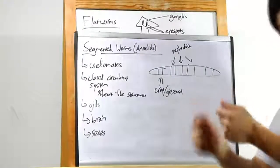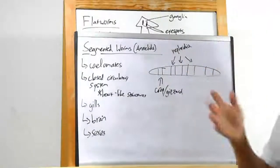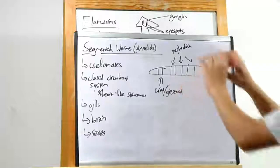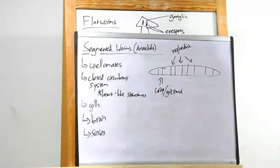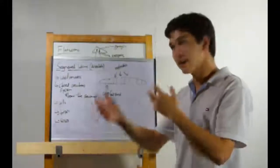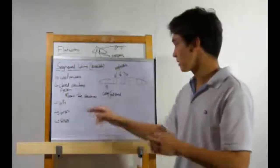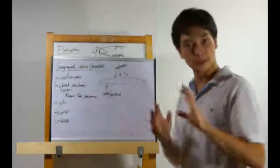Their movement helps, their undulation helps move blood throughout their entire system to their internal organs. These are heart-like structures. They have gills. They can actually take in oxygen. They have a brain, which is pretty new. I mean, it used to just be ganglia.